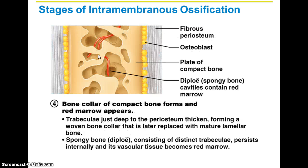The last step is that a bone collar forms, made of compact bone. You're also going to have red bone marrow start to appear. Once this occurs, you'll have your fully formed spongy bone and compact bone. Over time, you're going to start to rebuild and break down bone as a normal process of osteogenesis, maintaining bone strength.